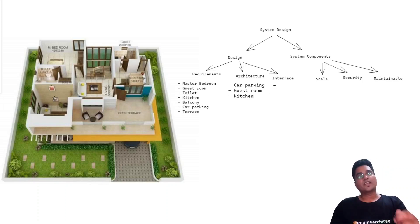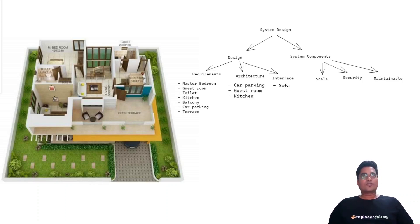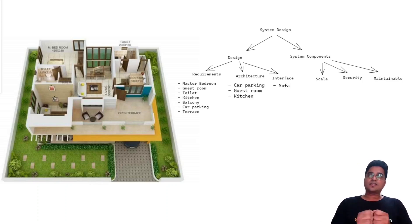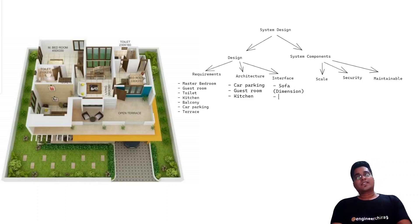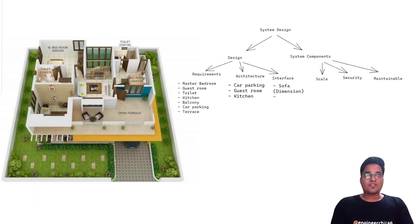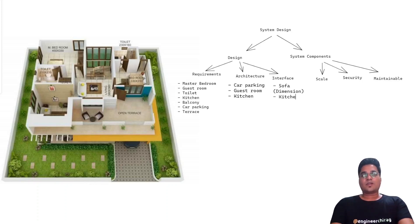Interfaces are all about getting into the granular details. For example, when you need a sofa for gaming, you need to know the dimensions of the space available. Similarly, if you have to design a model of the kitchen — which color to use, how much cupboard space there will be, fridge placement, the drawers, and granite details — all of that will be in your interfaces.